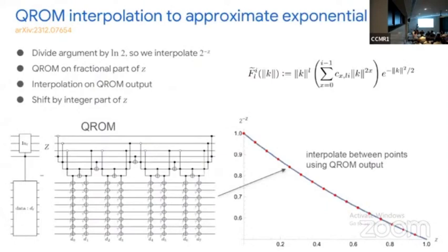For the exponential, we use a QROM interpolation. QROM is essentially a circuit where a register stores Z and outputs data — here we're working out 2 to the minus Z, a slightly adjusted exponential. The data output gives information for each segment of a polynomial interpolation, providing a slope, intercept, and quadratic term between points. The overall complexity is just a QROM with quite small cost: the number of Toffolis goes like the number of interpolation points, plus some multiplications for the polynomial.